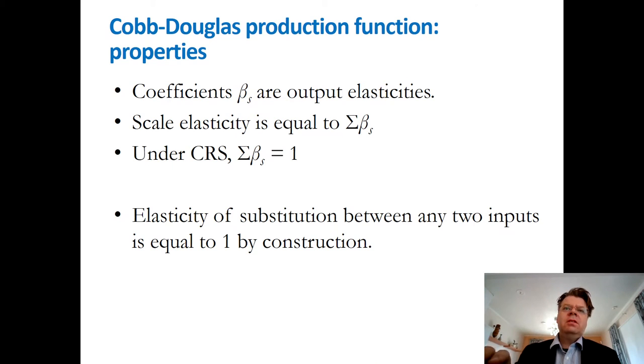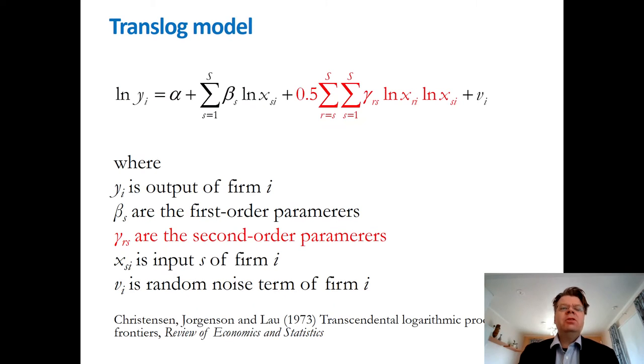This limitation with the substitution elasticity motivated then the work in the late 60s and early 70s to develop the so-called flexible functional forms. And perhaps the most widely used nowadays is the so-called translog, transcendental logarithmic functional form. Notice that the translog can be seen as the extension of the Cobb-Douglas functional form.